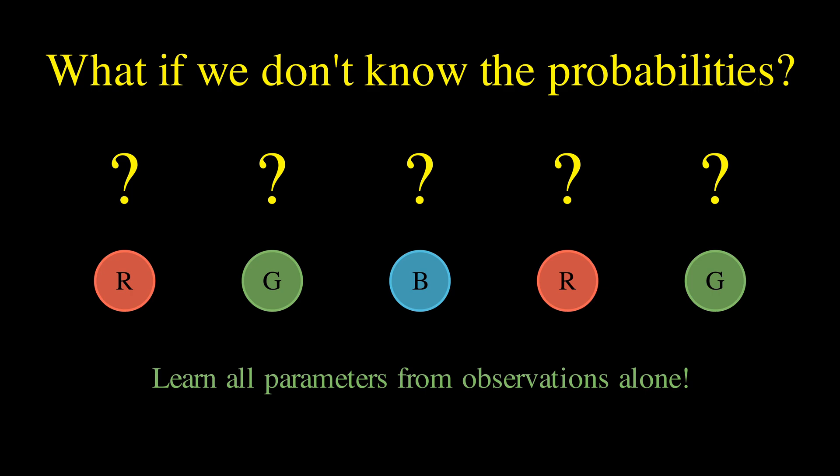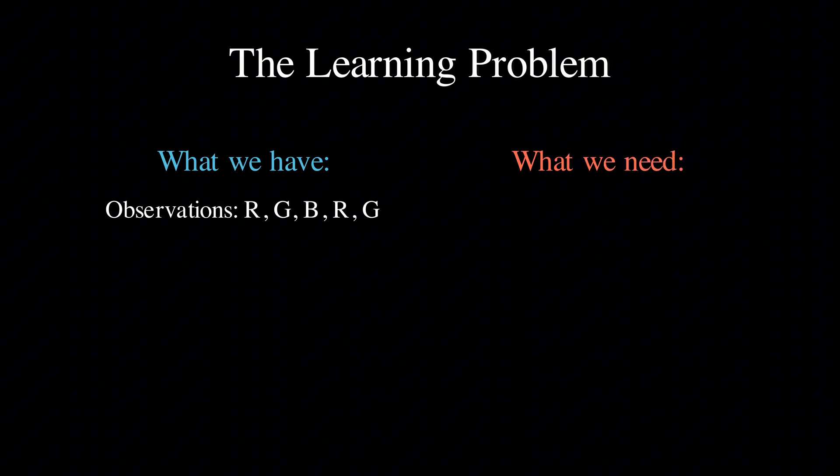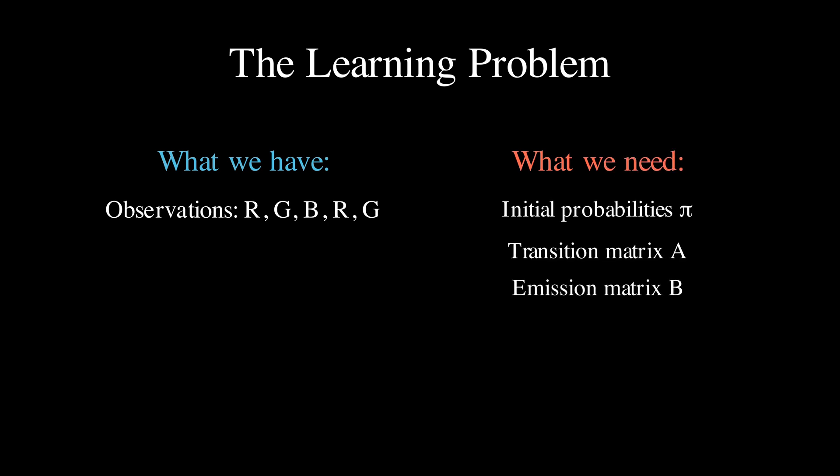Let me set up the problem properly, so we're on the same page. In our previous videos, we always assumed we knew all the numbers in our hidden Markov model. We knew the initial probabilities, the transition probabilities between mood states, and the emission probabilities for hat colors given each mood. But in real life, we almost never have this luxury. Instead, what we typically have is just a sequence of observations, like someone wearing red, then green, then blue, then red again, and from this data alone, we need to figure out all those probability tables that make the model work.